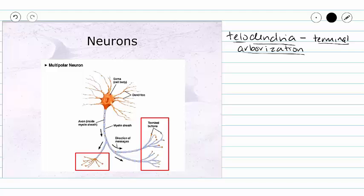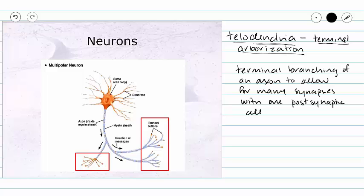So it's the terminal branching of an axon to allow for many synapses with one postsynaptic cell. This is going to increase the likelihood of producing an effect at the postsynaptic cell. Because just like our axon collaterals, which we see here in these branches in black, we are also going to see that action potential go down each of our telodendria all at the same time to arrive at our target cell and produce a large signal to create a response in our target cell.